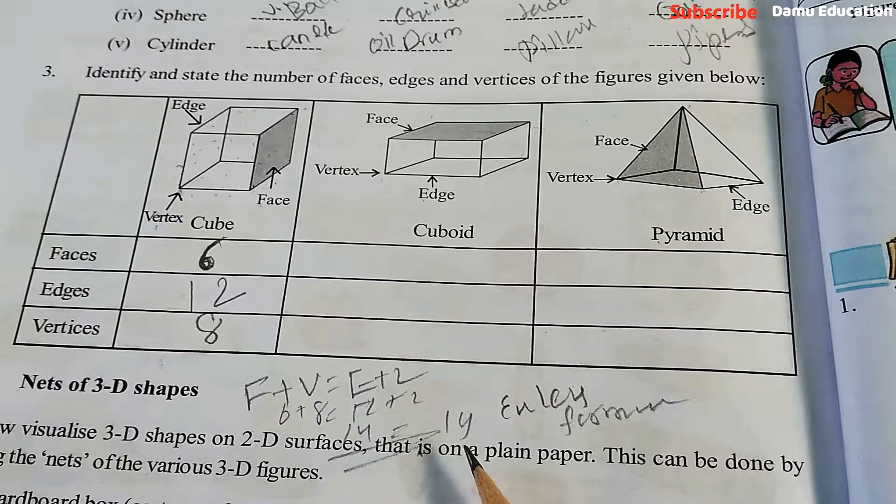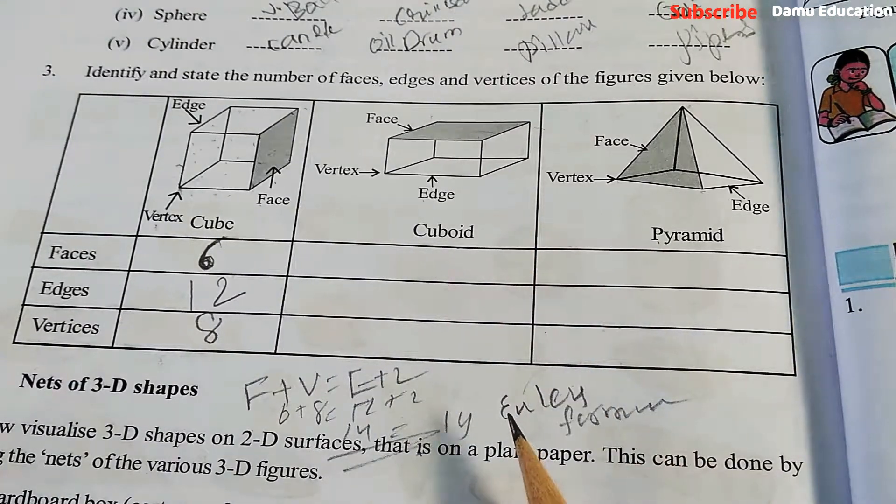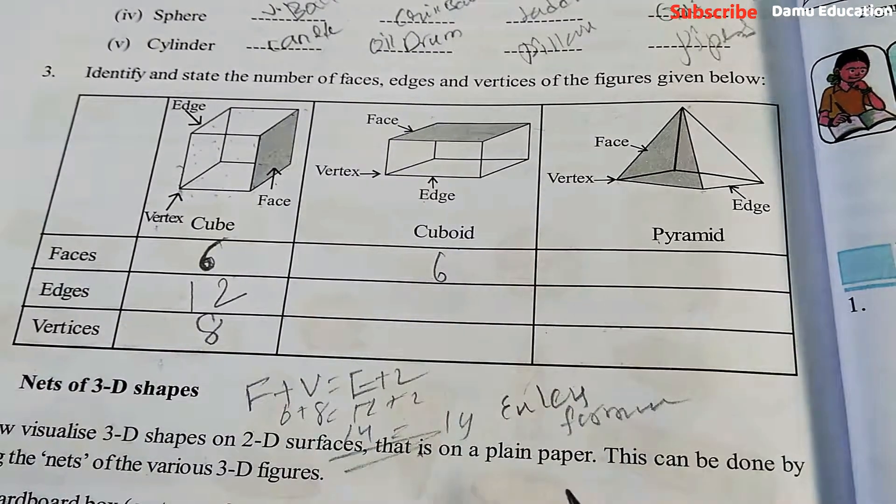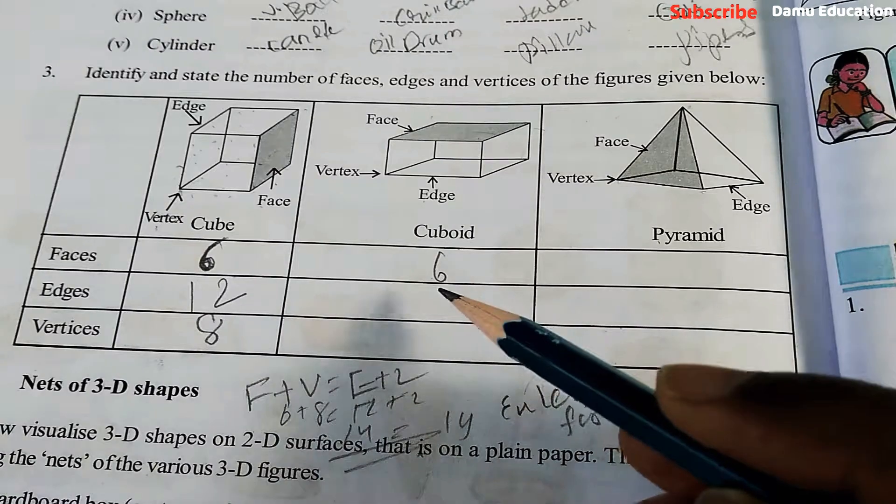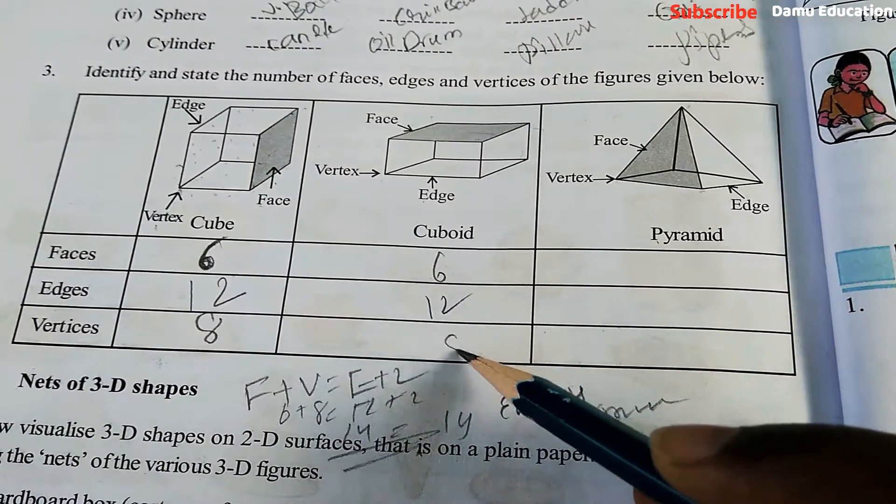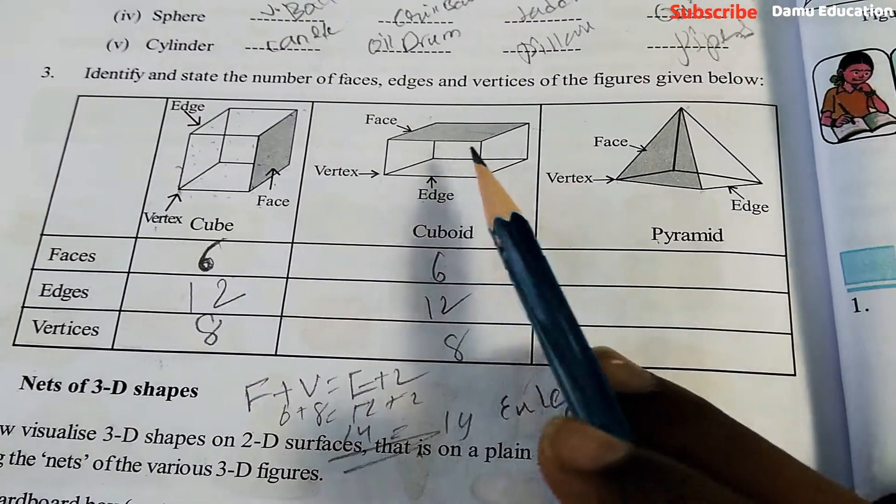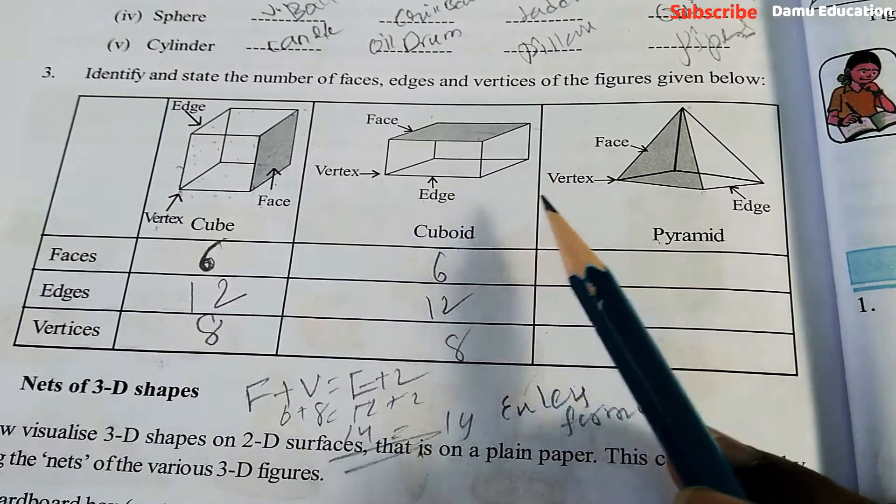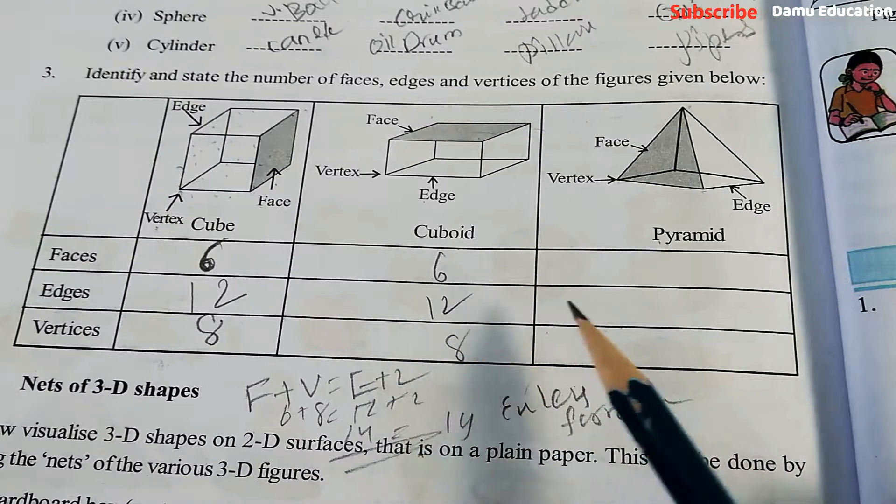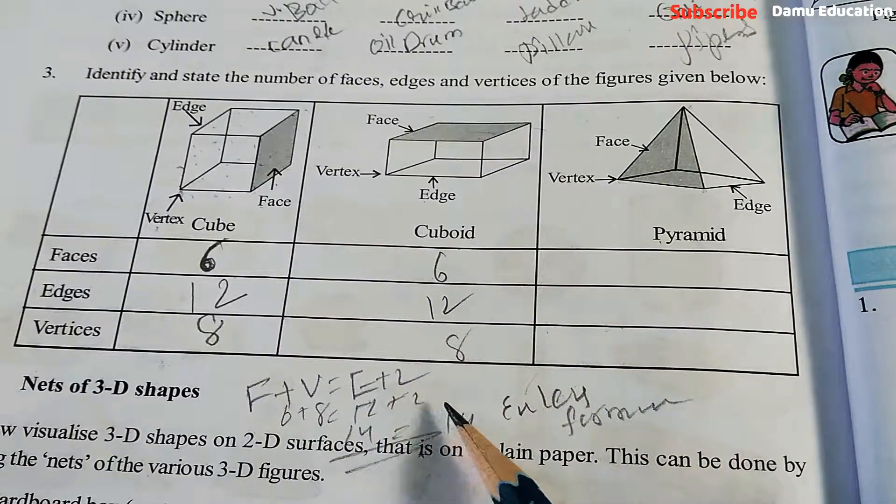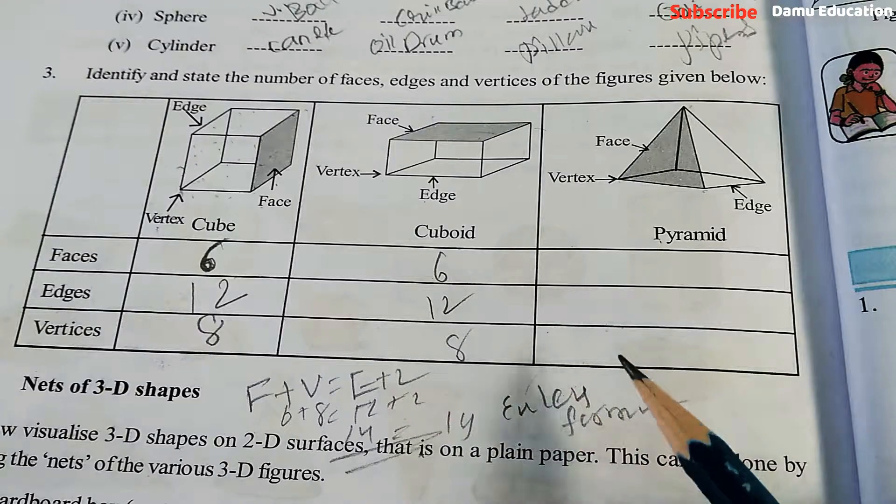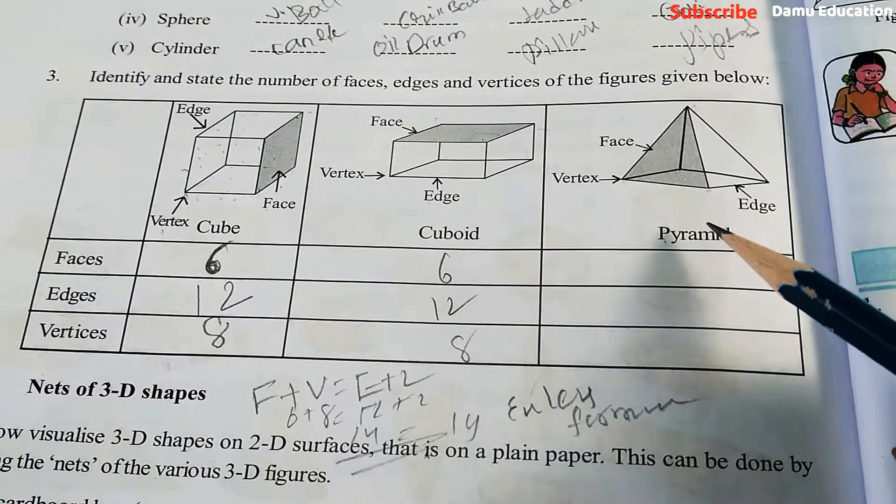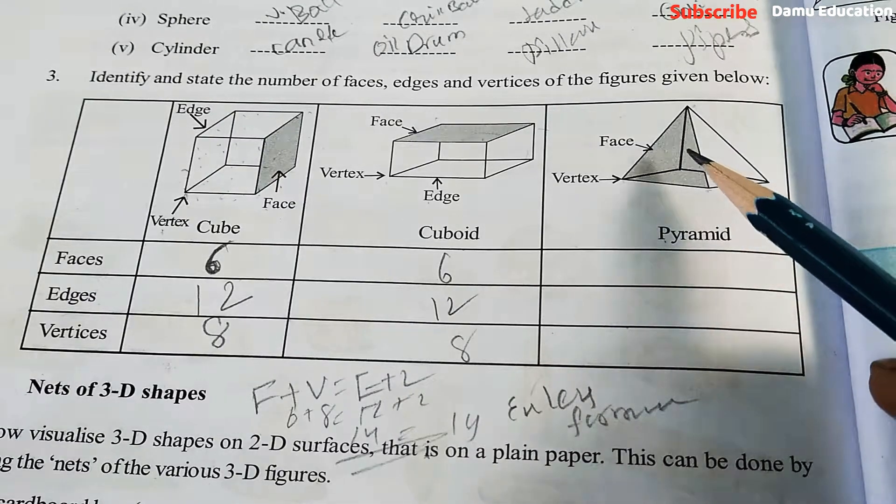We'll check with cuboid also. How many faces? Like cube, cuboid has six faces. Edges also twelve. Vertices also eight, because here length is changing but shapes are not changing. Cube and cuboid both have the same properties. So six plus eight equals twelve plus two, which is fourteen equals fourteen.